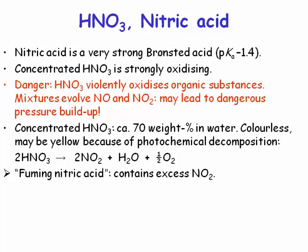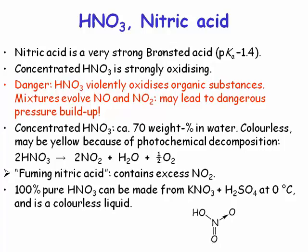Nitric acid should not be yellow — yellowing only occurs once it starts decomposing or has been contaminated with something it has oxidized. It's kept in brown bottles to protect it from photochemical degradation, since exposure to light causes decomposition. Fuming nitric acid, which you won't encounter in the teaching laboratory, contains excess nitrogen dioxide — a brown gas — and is very difficult to separate from water.